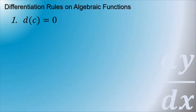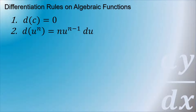The first rule: the derivative of a constant is equal to 0. The second rule is called the power rule — the derivative of u raised to n is equal to n times u raised to n minus 1, times the derivative of u.